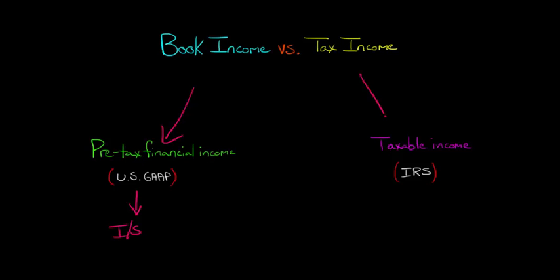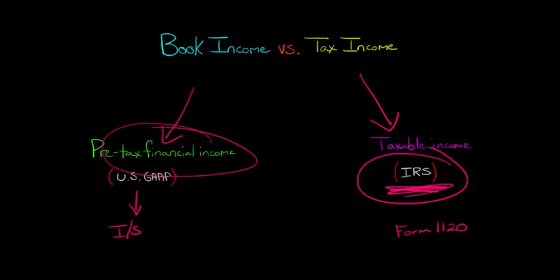Now taxable income, tax income, is that which is computed for purposes of your tax return for the corporation that's submitted to the IRS. So there's this Form 1120 that a corporation must file to pay the corporate income taxes. And so the taxable income is what is reported to the IRS, whereas the pre-tax financial income is reported to investors and creditors in the financial statements.